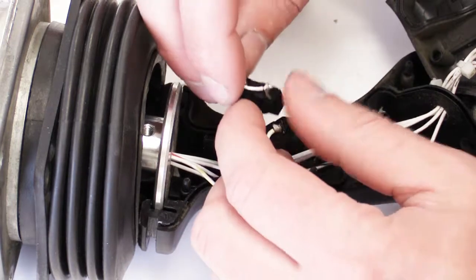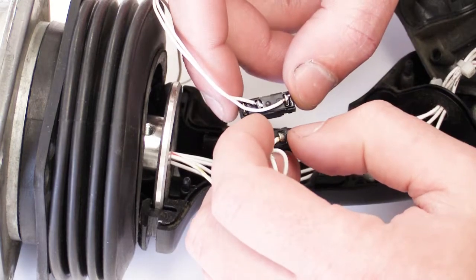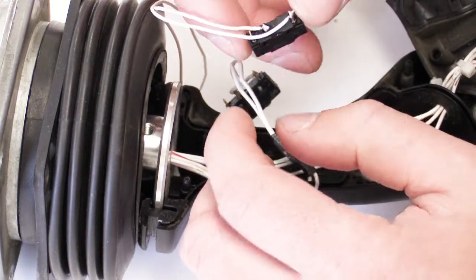Your new switch will come with wire leads already attached to the back terminals. Use a solder gun and remove the wire leads and discard.